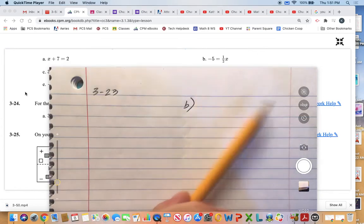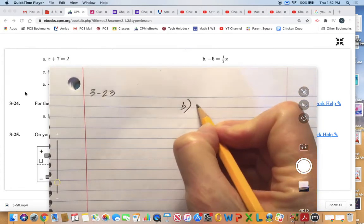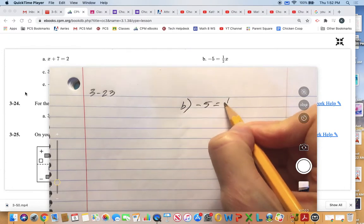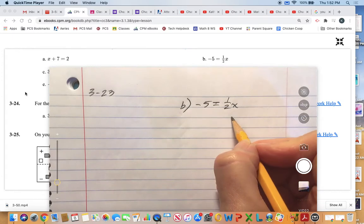This is problem 3-23b, and the original problem is negative 5 equals 1/2 times x. We're trying to get x by itself.